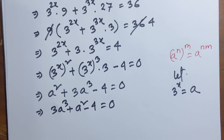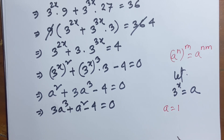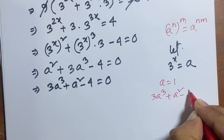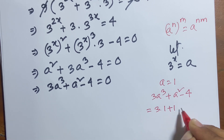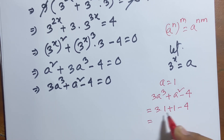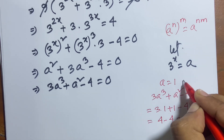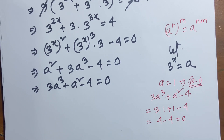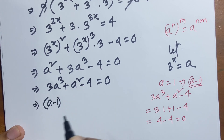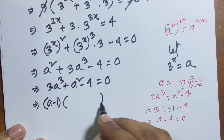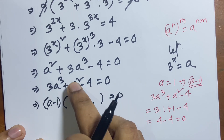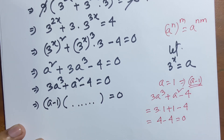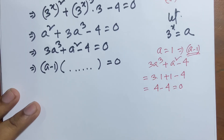Now I can find one factor of this equation. If a equals 1: 3 times 1 cubed plus 1 squared minus 4 equals 3 plus 1 minus 4 equals zero. So (a minus 1) is a factor. Now I can say (a minus 1) is one factor, and I'll find the other factor by dividing the equation by (a minus 1).